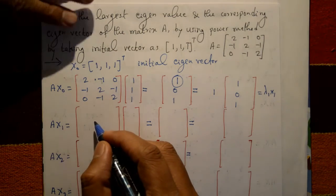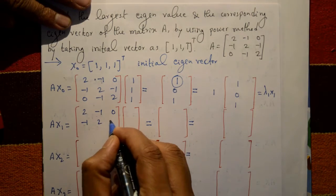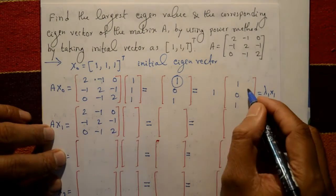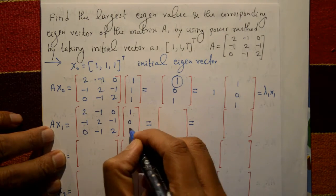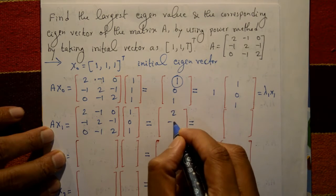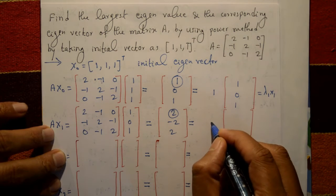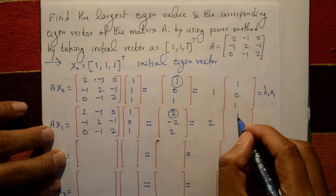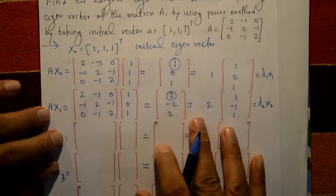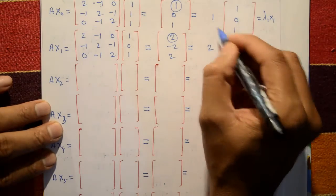Again compute A × x1: matrix A = [[2,-1,0],[-1,2,-1],[0,-1,2]] and x1 = [1, 0, 1]ᵀ. Matrix multiplication gives [2, -2, 2]. The largest element is 2, so take 2 outside, giving λ₂ = 2 and x2 = [1, -1, 1].